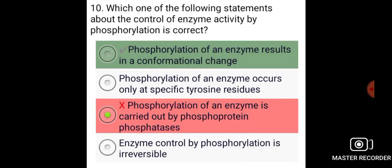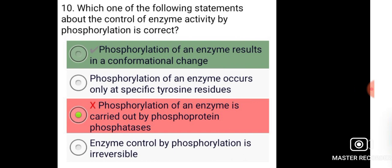Which one of the following statements about the control of enzyme activity by phosphorylation is correct? Phosphorylation of an enzyme results in a conformational change.